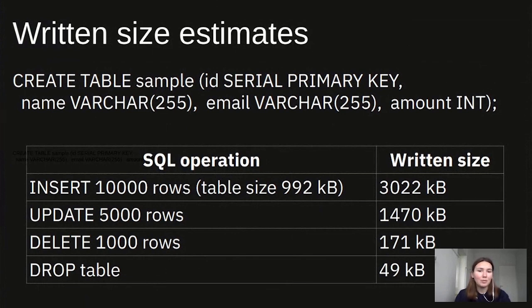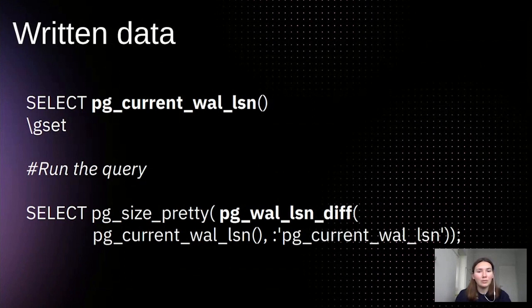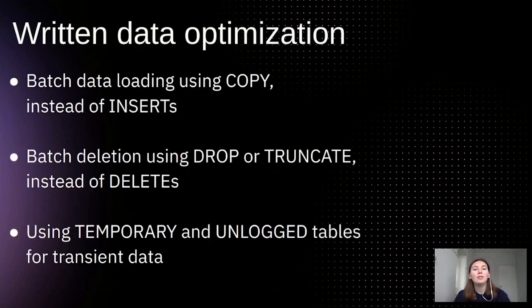Note that PostgreSQL background and utility commands such as VACUUM and auto-vacuum can also generate some WAL. Also note that failed transactions generate the same amount of WAL. To measure the exact size of WAL generated by your query, you can use the PostgreSQL function pg_current_wal_lsn() to get the latest WAL position before and after a query, and use pg_wal_lsn_diff() to calculate the difference between LSNs — this will be your written data size. To optimize this metric, you can use batch operations where possible to eliminate WAL metadata overhead. For example, use COPY for data loading instead of multiple separate INSERT statements.